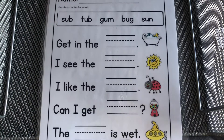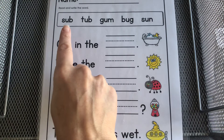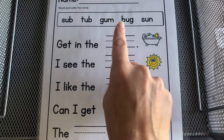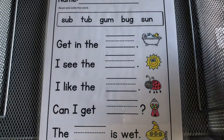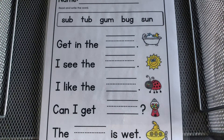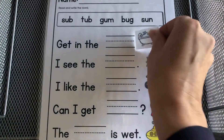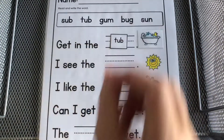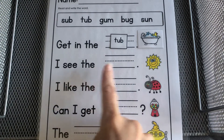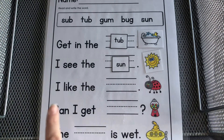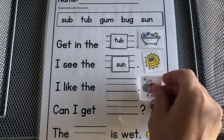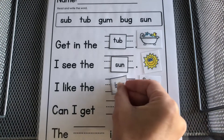Let's look at the other side. Here are our words again — we're going to practice: sub, tub, gum, bug, sun. We have to find the one that matches the picture on the right. Are you ready? It says: get in the — what is it? Get in the tub. I see the — what is that? I see the sun. I like the — what's that? I like the bug.